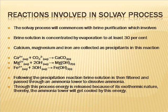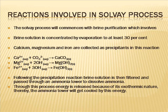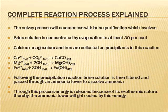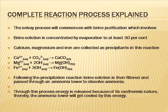Reactions involved in the Solvay process. The Solvay process commences with brine purification. Brine solution is concentrated by evaporation to at least 30%. Calcium, magnesium, and iron are collected as precipitants: Ca2+ + CO3(2-) → CaCO3(s); Mg2+ + 2OH- → Mg(OH)2(s); Fe3+ + 3OH- → Fe(OH)3(s). Following the precipitation reaction, the brine solution is filtered and passed through an ammonia tower to dissolve ammonia. Energy is released due to the exothermic nature of this process, and the ammonia tower is cooled accordingly.